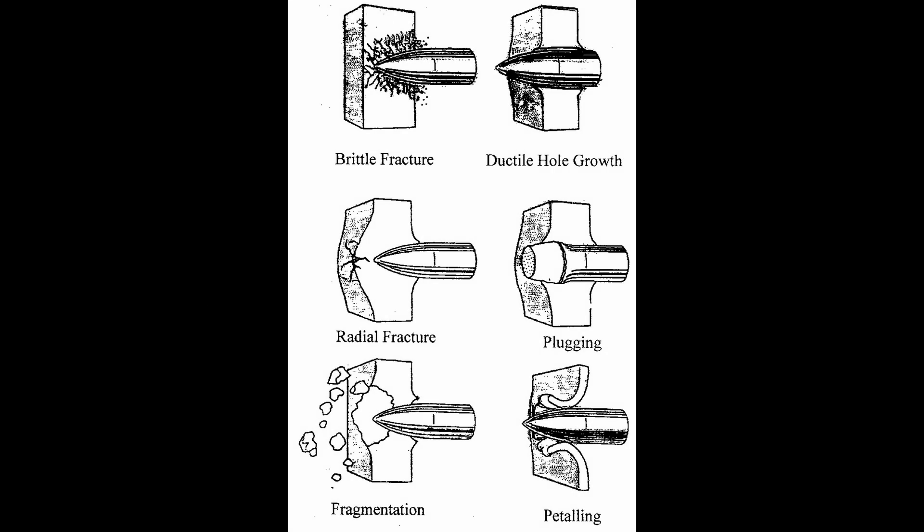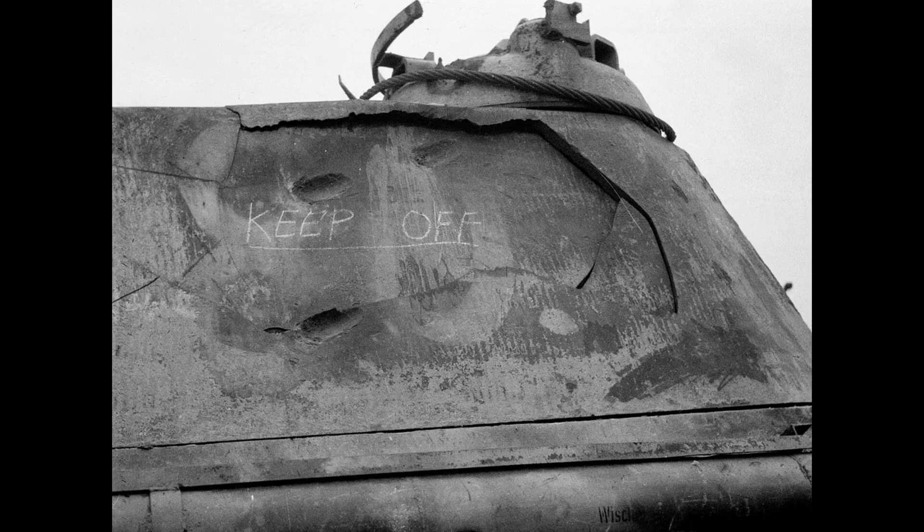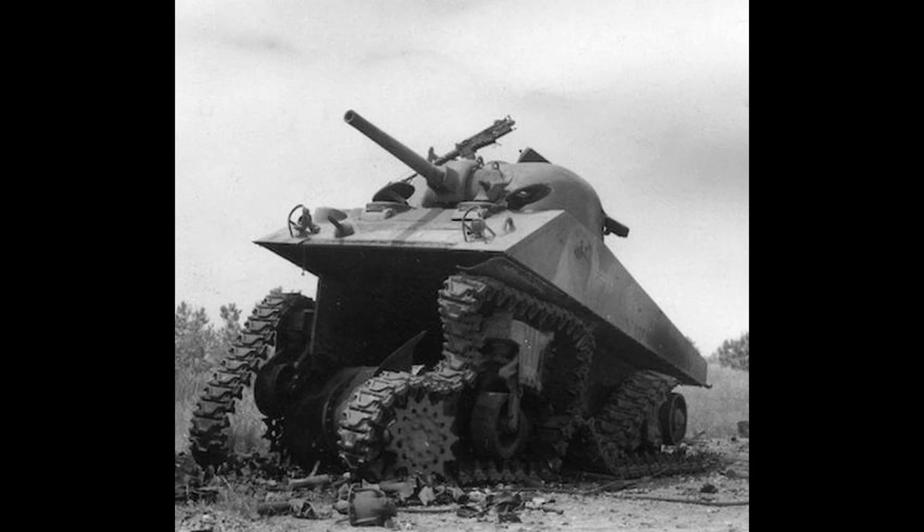What actually is spall? Spall, as the name doesn't suggest, is a fragment of armour that has broken off the larger main piece of armour. As you can imagine, this isn't entirely nice for the crew inside. They aim for this result instead of full conventional penetration, as it is easier to achieve in comparison to just wanting to cause enough mechanical stress to the armour.